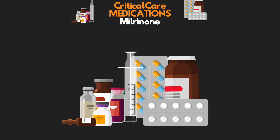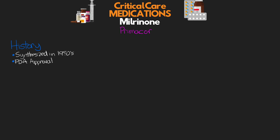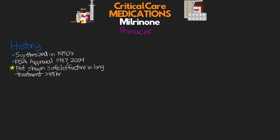Alright, so with that out of the way, let's go ahead and get started talking about Milrinone, also known by the trade name Primacore. Originally synthesized in the 1980s by the Sterling Winthrop Research Center, based out of the United Kingdom, it had initial FDA approval in 1987 and further FDA approval in 2004. That said, the FDA does give warning that it's not been shown to be safe or effective in longer treatment of patients with heart failure greater than 48 hours.